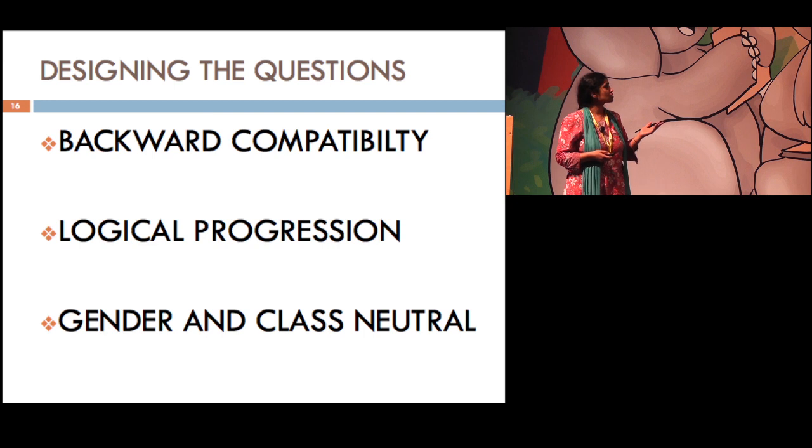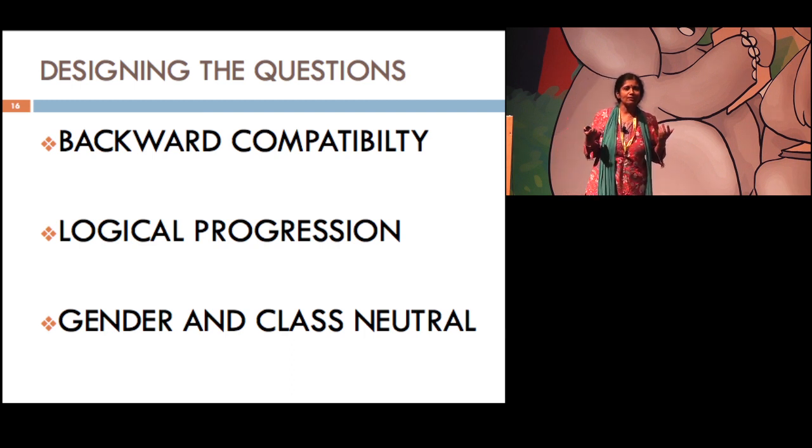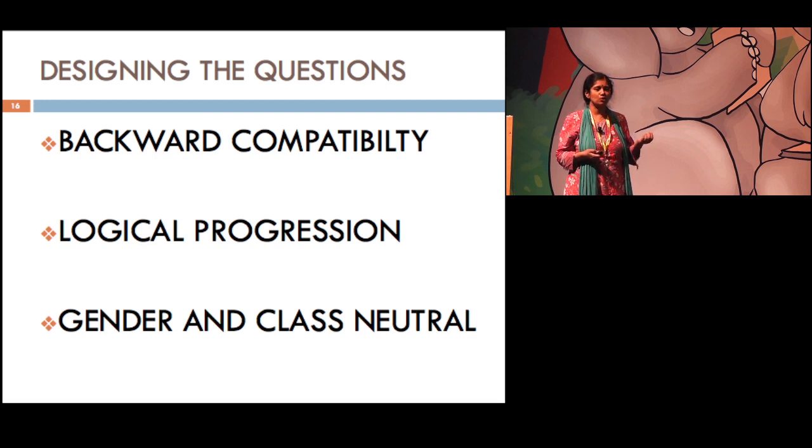And the phrasing of the question is very important because it has to be gender and class neutral. For example, if you go into rural North India and ask, 'Kitne bachche hain?', there is a good chance the man who is responding is going to say four, when he has four boys and three girls. The person may just forget the girls, that's the way the language is in those parts. When you say bachche, you normally think only of the boys. So the enumerator has to ask the question, 'Kitne ladke, kitni ladkiyan?'. That's how we ensure that you get the right answers.